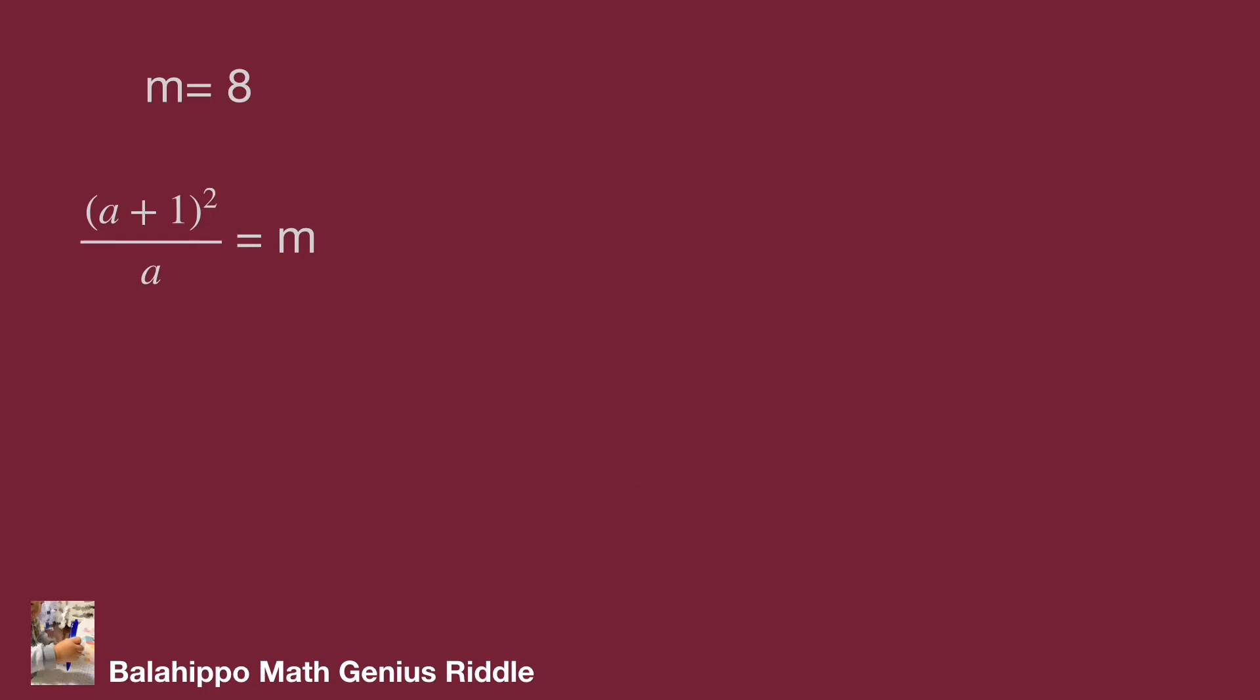When m equal to 8, substitute m by 8. Same process. We get a² - 6a + 1 equal to 0.